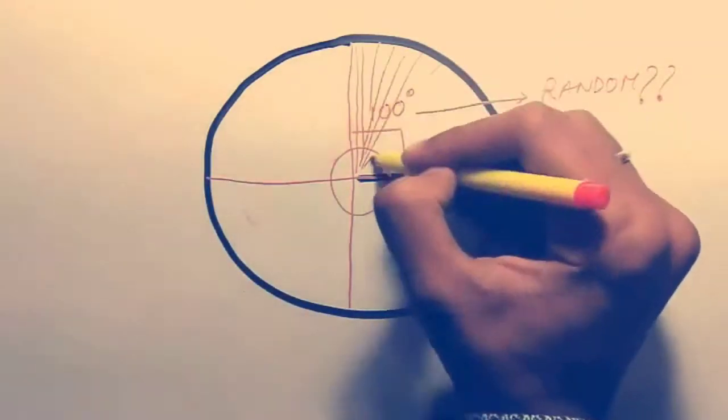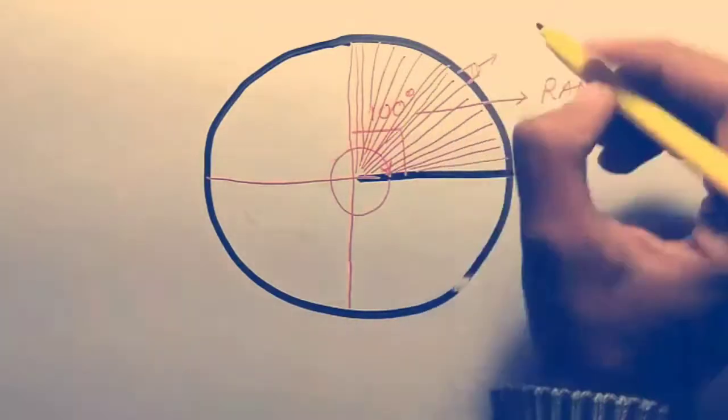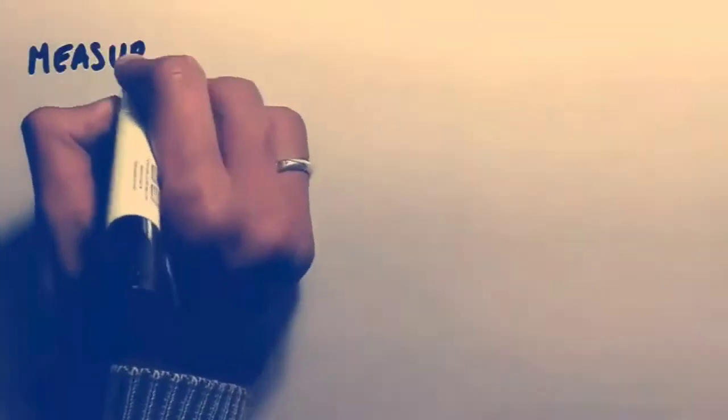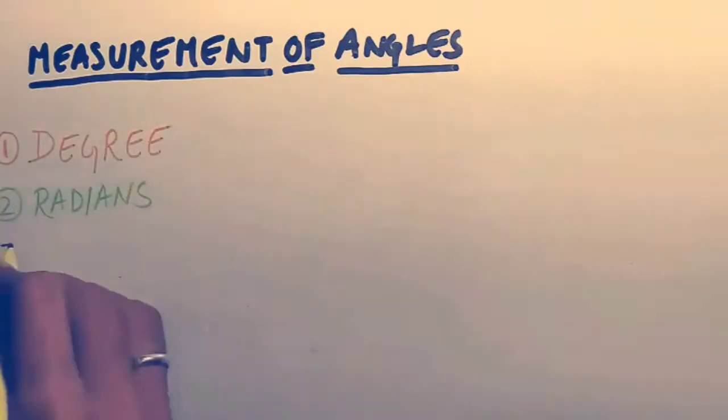In the gradient system of measuring an angle, a circle is divided into 400 chunks and each chunk is called one gradient. You might not have heard the term gradients because it is rarely used. But measurement of angles is done in many ways. The first one is the degree system, second one is the radian system, and third one is the gradient system.